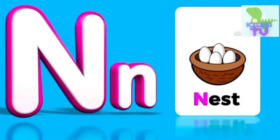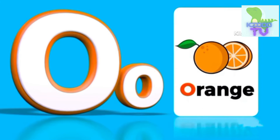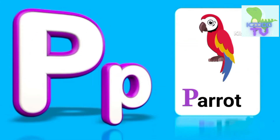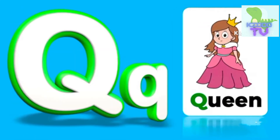M is for Moon, N is for Nest, O is for Orange, P is for Parrot, Q is for Queen.